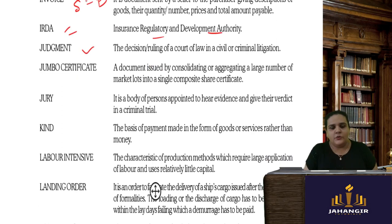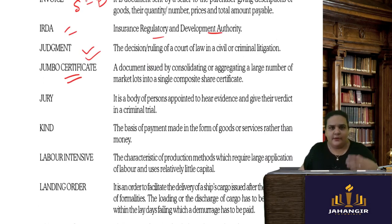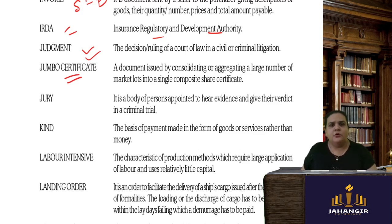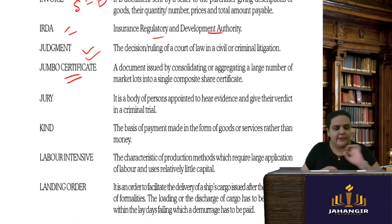Judgment is the decision or ruling of the court in civil or criminal proceedings or litigations. A jumbo certificate is issued when a shareholder has too many physical share certificates — for example, starting with one share, getting bonus shares, then rights shares, the total multiplies. Instead of holding many certificates, you ask the company to issue one jumbo share certificate mentioning your entire shareholding range.